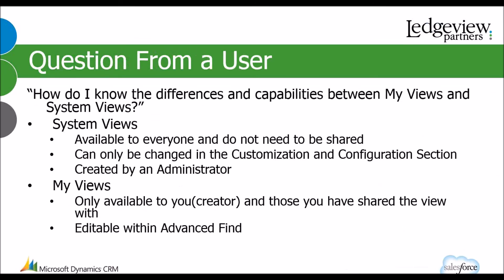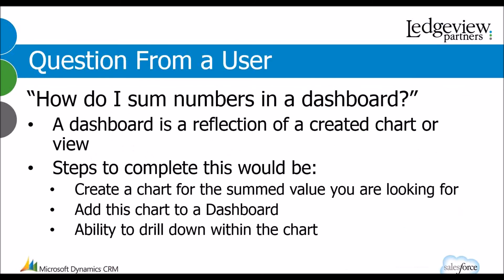How do I know the differences and capabilities between my views and system views? System views are available to everyone and do not need to be shared. They're either created by an administrator or come out of the box, and they can only be changed in the customization and configuration section. My views are views that you created, and they're only available to you and those you've shared the view with. They are editable with an advanced find — as we did in our last webinar by editing columns, you can really customize them to the information you'd like, whereas a system view is set up by another user for something that's going to work for everyone.